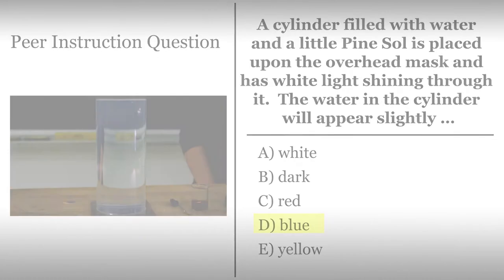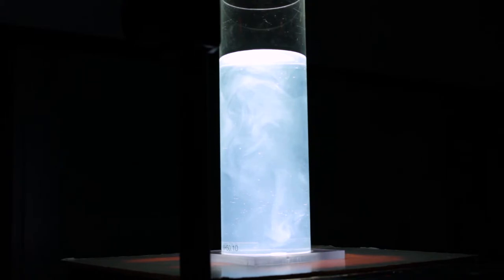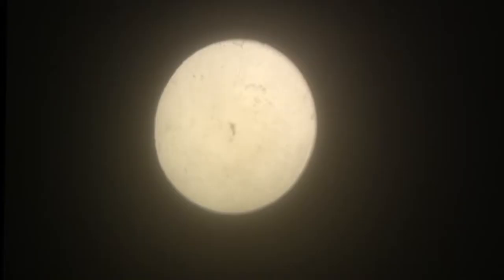Note that the water now has a bluish glow. This effect is called Rayleigh scattering. Small particles from the pine salt are preferentially scattering the short wavelength blue light, much better than the long wavelength red light. Note how the spot on the screen now has a reddish tinge due to this preferential scattering. A larger percentage of red light has passed through unscattered. In astronomy, we call this reddening.